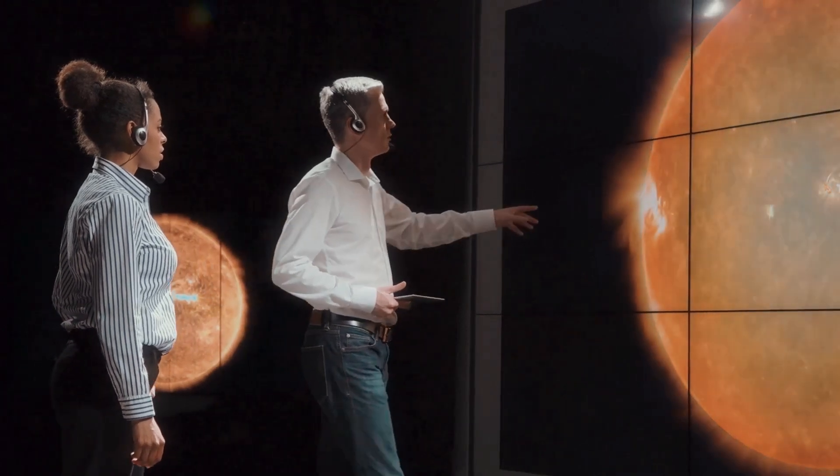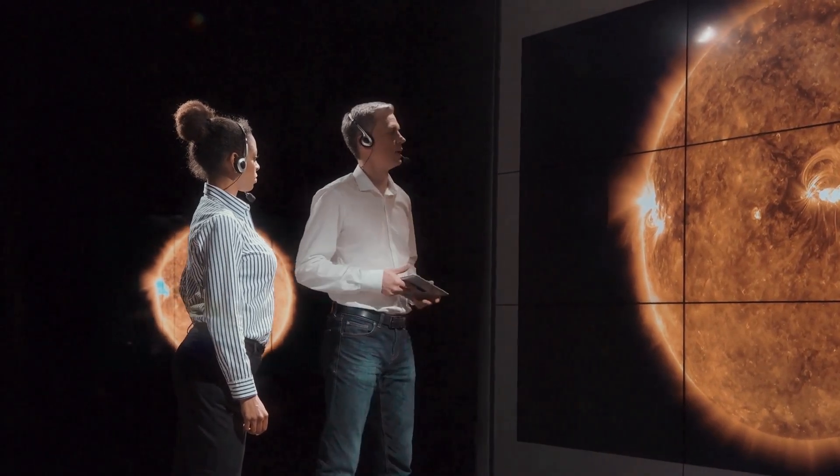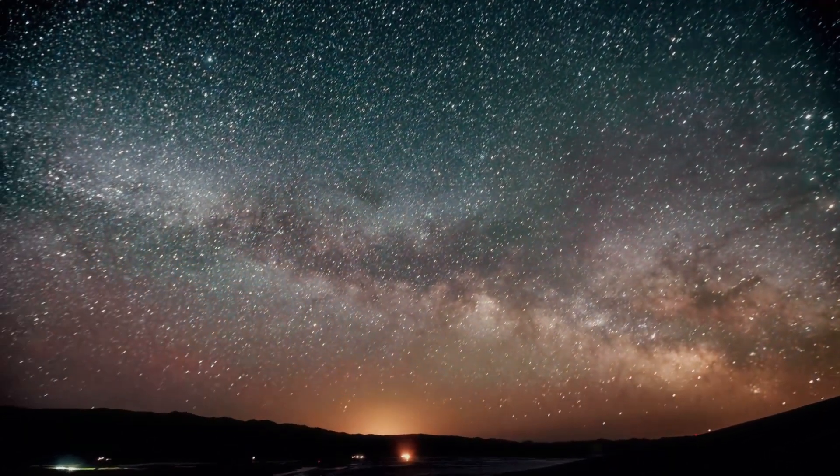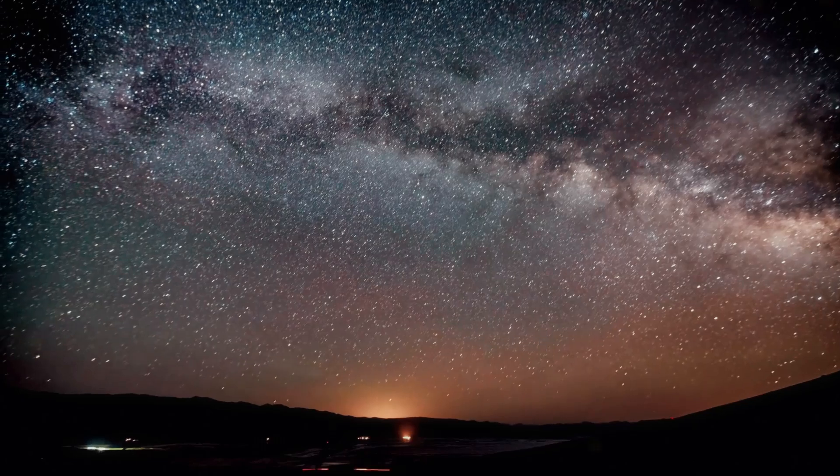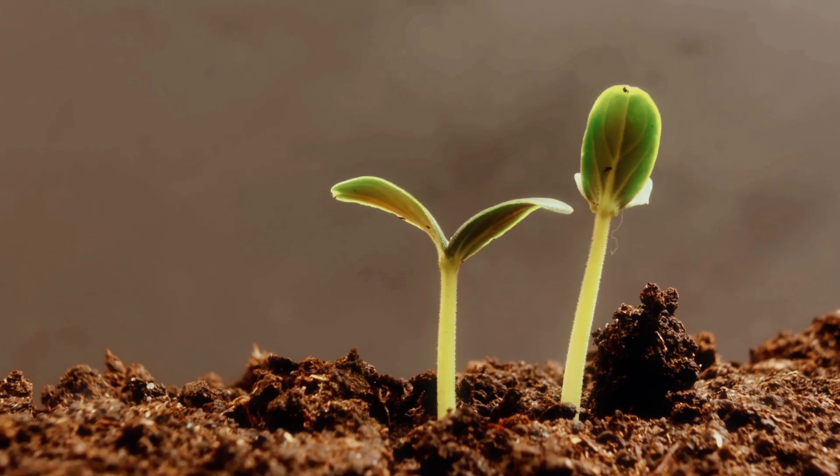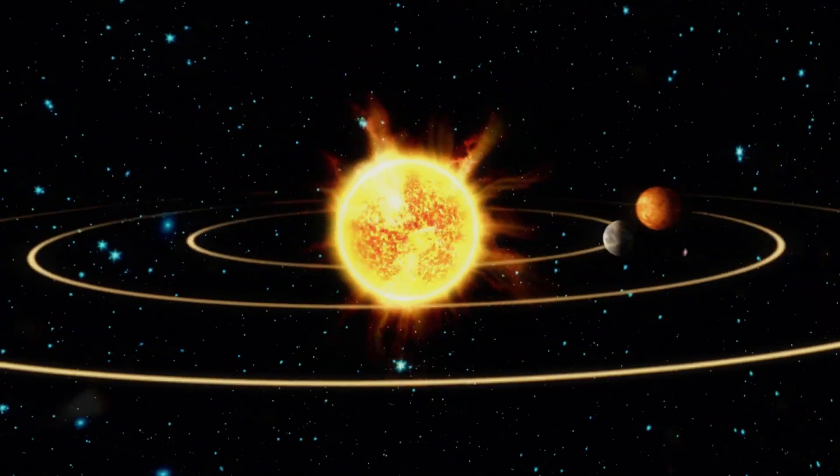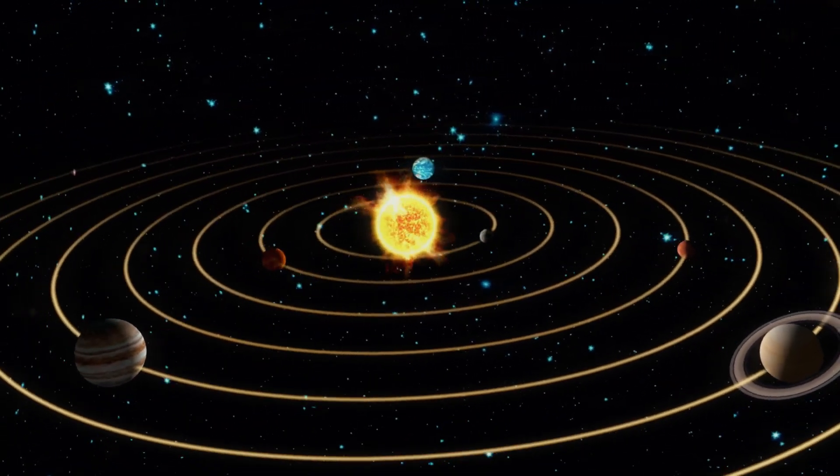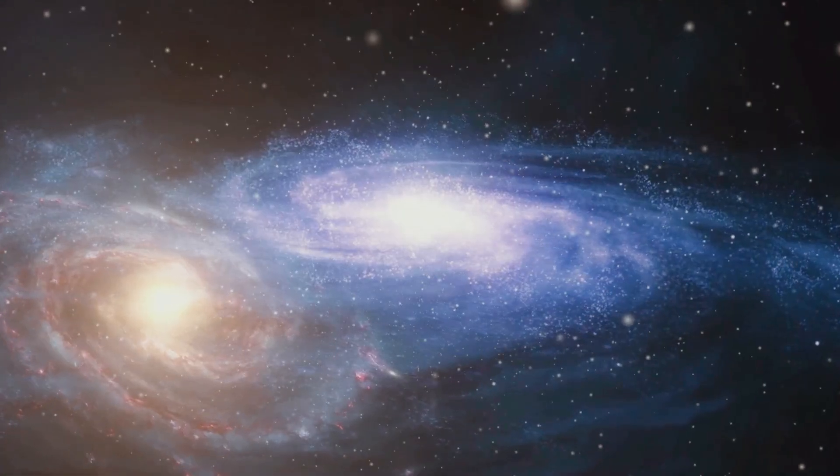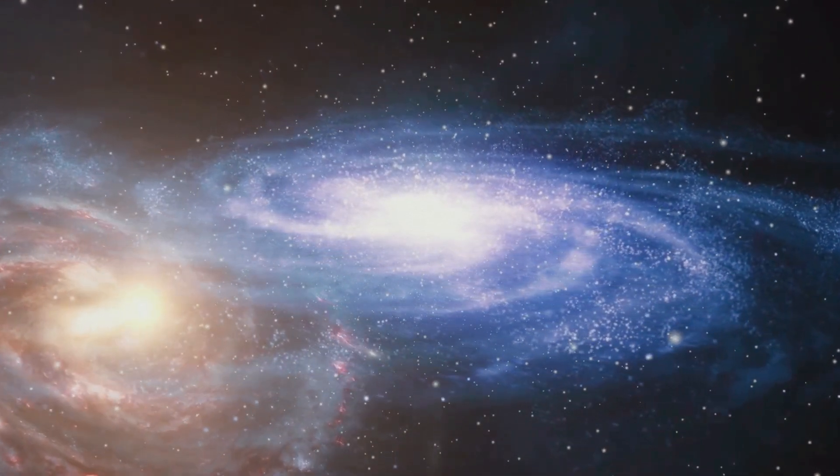Some scientists believe that instead of facing destruction, our sun and its planets could end up floating safely in a new part of the galaxy after the galaxy crash. Sure, things would be different. Our night sky might look entirely alien, with new constellations and stars we've never seen before. But life could, theoretically, go on. It's a chilling yet fascinating thought—our solar system, adrift in a newly merged galaxy, still orbiting the sun, but in an entirely different cosmic landscape. And as we explore the timeline of these events, we'll see just how long we might have to prepare for this space catastrophe.